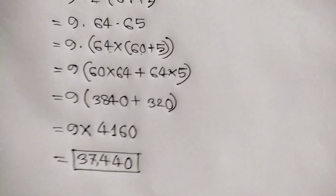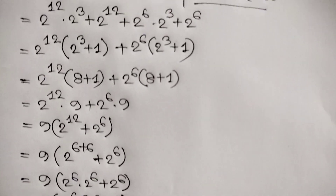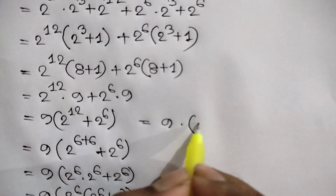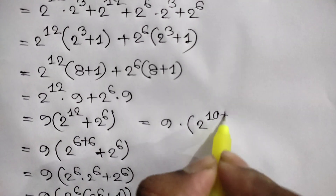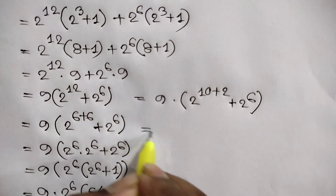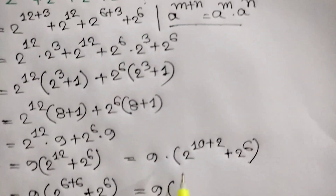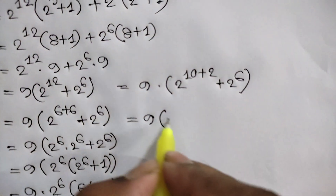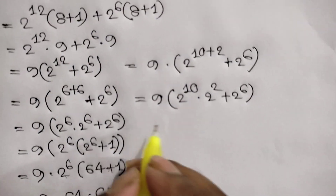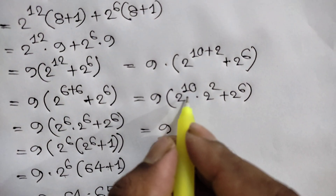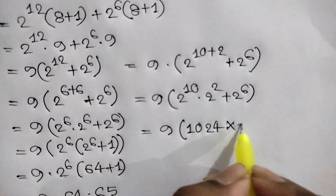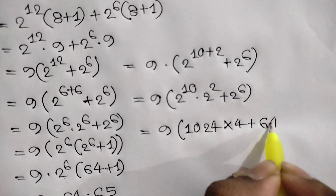Now we will show the second method. We have 9 times (2 to the power 12 plus 2 to the power 6). Here 2 to the power 12 can be written as 2 to the power 10 plus 2. Using the exponent rule, we write 2 to the power 10 times 2 squared, plus 2 to the power 6. We know 2 to the power 10 is 1024, 2 squared is 4, and 2 to the power 6 is 64.